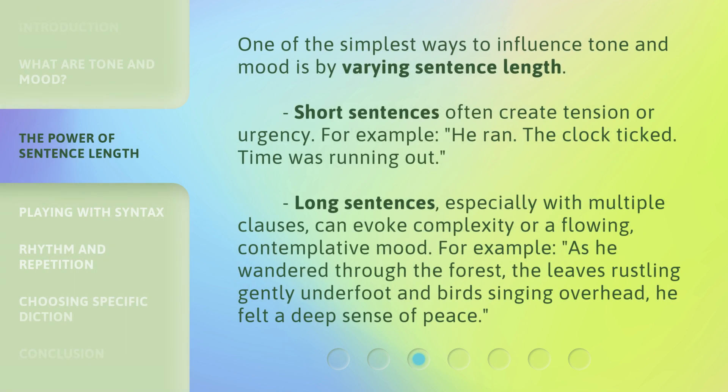One of the simplest ways to influence tone and mood is by varying sentence length. Short sentences often create tension or urgency. For example: He ran. The clock ticked. Time was running out. Long sentences, especially with multiple clauses, can evoke complexity or a flowing, contemplative mood. For example: As he wandered through the forest, the leaves rustling gently underfoot and birds singing overhead, he felt a deep sense of peace.